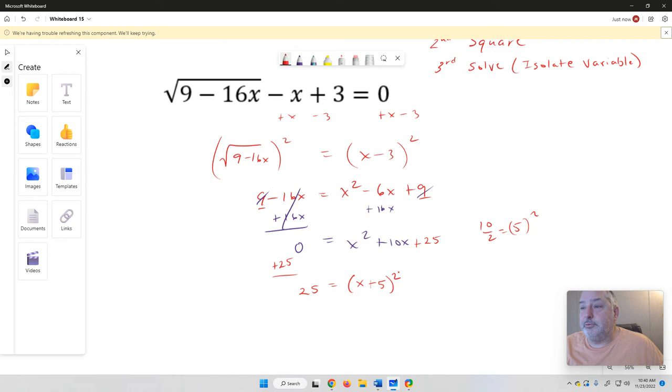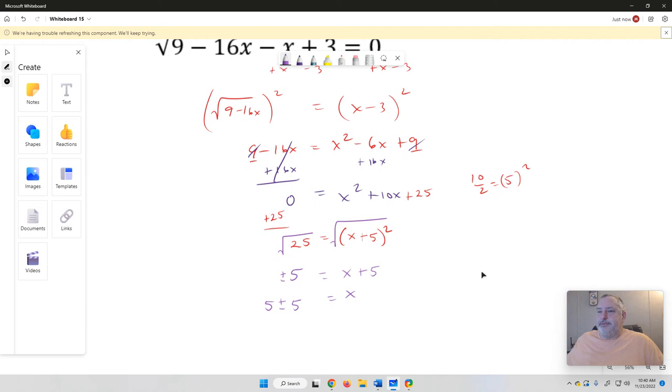And so now, we're going to square root each side to solve. So we're going to take the square root. So that gives me positive or negative 5 equals x plus 5. And so x is going to equal negative 5 plus or minus 5. So I've got two possible answers here. I've got negative 5 plus 5 and negative 5 minus 5. So that gives me 0 or negative 10. So those are my two possible answers.